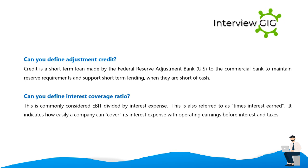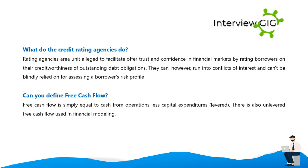Can you define interest coverage ratio? This is commonly calculated as EBIT divided by interest expense, also referred to as times interest earned. It indicates how easily a company can cover its interest expense with operating earnings before interest and taxes. What do credit rating agencies do? Rating agencies are alleged to facilitate trust and confidence in financial markets by rating borrowers on the creditworthiness of their outstanding debt obligations. However, they can run into conflicts of interest and cannot be blindly relied on for assessing a borrower's risk profile.